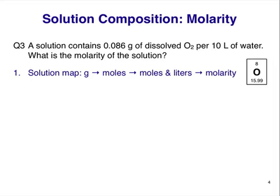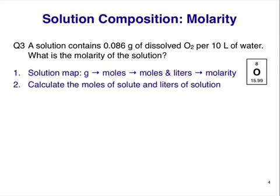We ultimately need moles of solute and liters of solution to calculate molarity. This time we have liters from the question, but we don't have moles of solute. Fortunately, we have enough information to calculate this. We will convert grams of O2 into moles of O2, and then use that information combined with liters of solution to calculate molarity. We have 2.7 × 10⁻³ moles of O2 and 10 liters of solution.